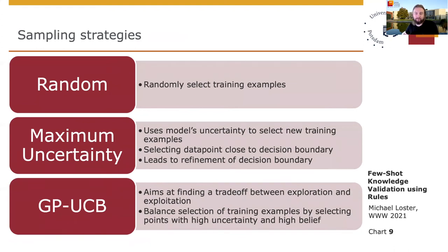A crucial part of the framework is how unlabeled facts are assigned to a user for evaluation. To this end, we evaluate three different selection strategies: random, maximum uncertainty, and GP-CB. Random refers to the simplest strategy in which unlabeled facts are selected at random. Maximum uncertainty sampling uses the model itself to assess how valuable the labeling of each data point is, using the model's uncertainty on unlabeled data points. The GP-CB strategy tries to find a balance between exploring the function space by selecting data points with high uncertainty, or exploiting the function space by selecting data points it is fairly confident about.